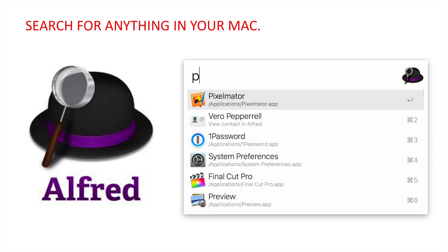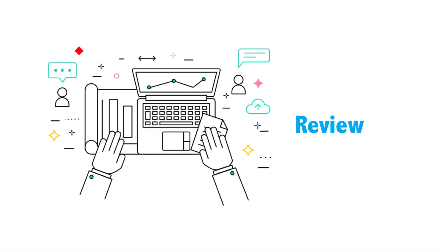The last tip is only for Mac, but it's super useful. Use it to search for anything on your Mac. This software is called Alfred. I hope you enjoyed this video and adopt some tips and methods to increase the efficiency of your work. In the end, let's review what we have learned today. Thank you.